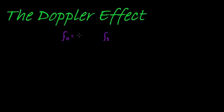To work out what the frequency that we observe is, we take this following formula. C being the speed of sound, or the speed of the wave, minus the velocity of the listener, divided by the speed of sound minus the velocity of the source.